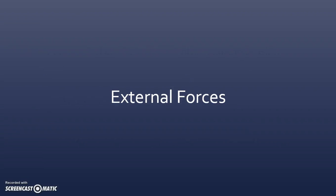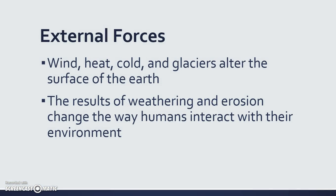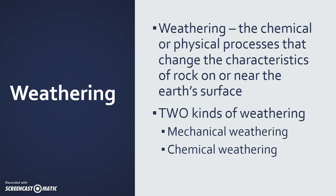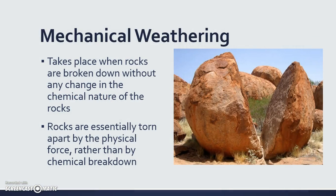Now that we've talked about internal forces, let's talk about what's happening on the outside — the external forces. External forces include wind, heat, cold, and glaciers, and how they alter the earth's surface. The results of weathering and erosion change the way that humans interact with their environment. When we talk about weathering, it is the chemical or physical processes that change the characteristics of rock on or near the earth's surface — a very important definition to know. There are two kinds of weathering: mechanical weathering and chemical weathering. In mechanical weathering, the rocks are broken down and torn apart by force rather than by a chemical breakdown.